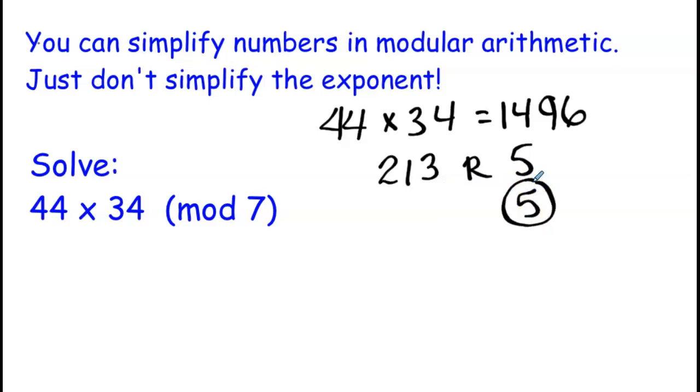But there is an easier way to do this often for people, and that's just to simplify these numbers right away. 44, we know that's equivalent to or congruent to 2 in mod 7 because 44 has a remainder of 2 when you divide it by 7. And 34, that's congruent to 6 mod 7 because 28 plus 6 is 34.